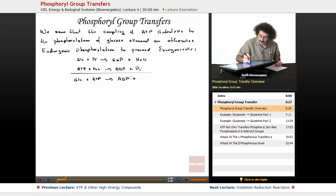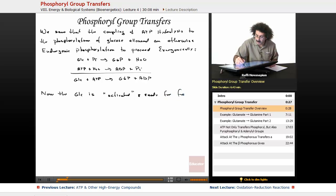And when we combined that we ended up with an alternate pathway: GLC plus ATP going to glucose 6-phosphate plus our ADP. Now the glucose is activated and ready for further reactions.